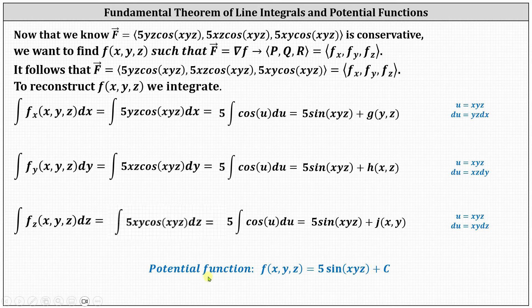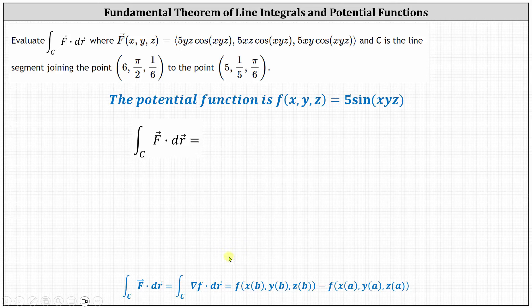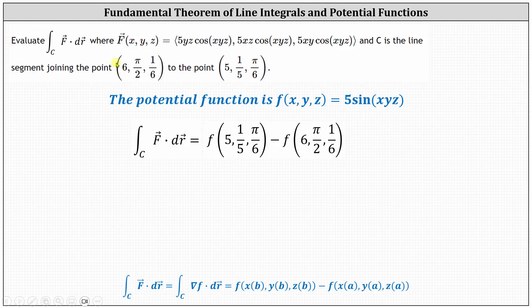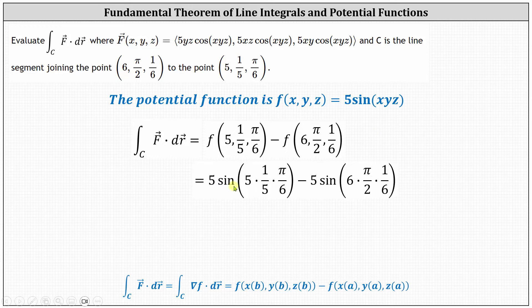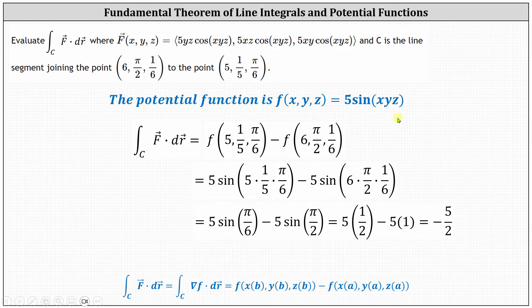Now we can use the potential function to evaluate the original line integral. The line integral along curve C of F dot dr equals the potential function evaluated at the endpoint minus the potential function evaluated at the beginning point. f(5, 1/5, π/6) equals 5 sine(5 · 1/5 · π/6) and f(6, π/2, 1/6) equals 5 sine(6 · π/2 · 1/6). Simplifying, we have 5 sine(π/6) minus 5 sine(π/2). Since sine(π/6) equals 1/2 and sine(π/2) equals 1, this gives us 5/2 minus 5, which equals negative 5/2.